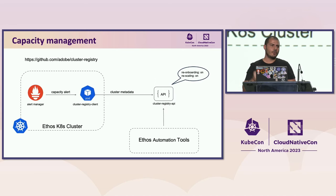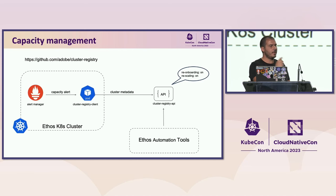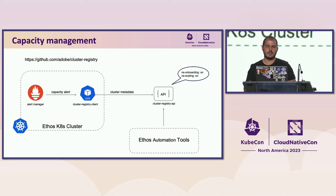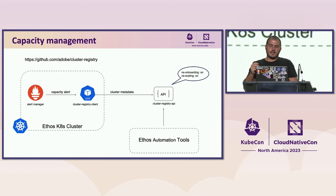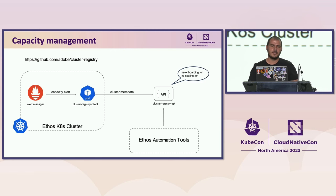At the cluster level, we measure if a cluster reaches capacity using Prometheus alerts. In Ethos, the source of record for cluster information is stored in an application named Cluster Registry, which is open source and available under Adobe's GitHub organization. A Cluster Registry client runs in every cluster and accepts signals from Alert Manager. We have multiple capacity sub-alerts that fire based on specific metric thresholds — such as number of nodes, available IPs, or number of namespaces. When a sub-alert fires, the main capacity alert notifies the Cluster Registry client, disabling namespace onboarding or freezing namespace quota increases.